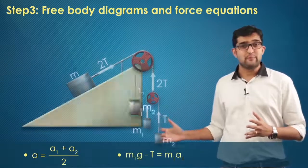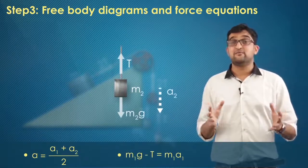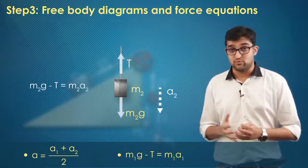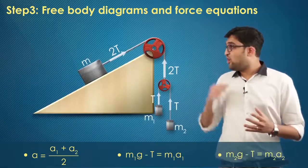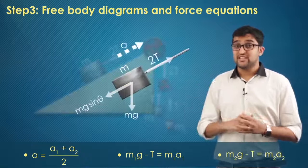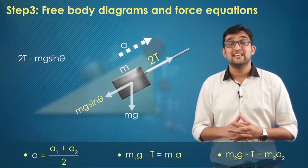Now let's move on to the FBD of M2. There, the expression will be M2·g minus T equals M2·A2. Now move on to the FBD of the M here. You get 2T minus M·g·sin(theta) equals M·A.